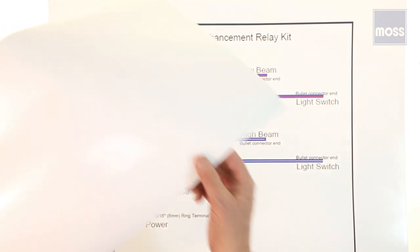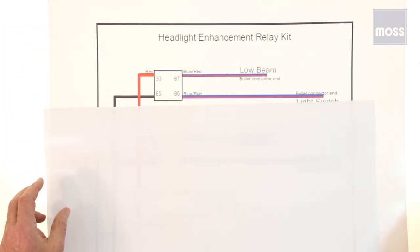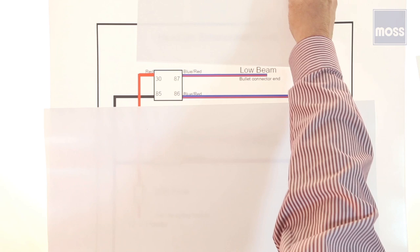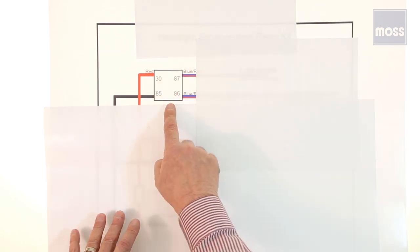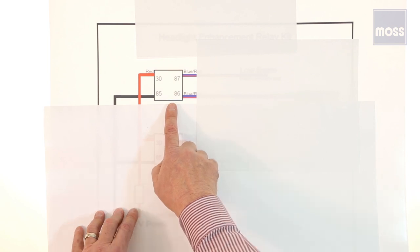What I want to do is reposition these little pieces of paper to block out some of the distractions. Now, here's the relay.